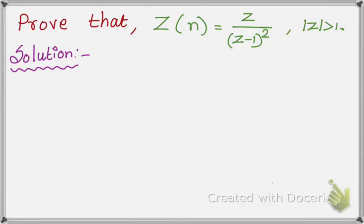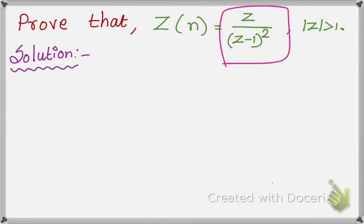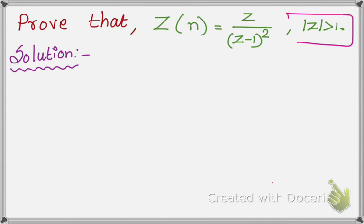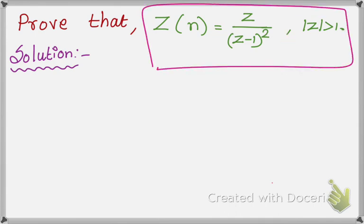Dear students, in this video we are going to solve a problem from Z-transform. The question is: prove that Z of n equals Z over (Z minus 1) the whole square, with mod Z greater than 1. So we are going to prove this term.